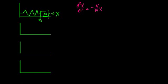Welcome back. In the last video, we looked at an ideal mass and spring system, and we found that its motion is described by this differential equation: d squared x over dt squared is equal to negative k divided by m times x. Now, we still don't actually know what x is as a function of time. In this video, we're going to try and find a solution for x that satisfies this differential equation by looking at the motion of the spring.